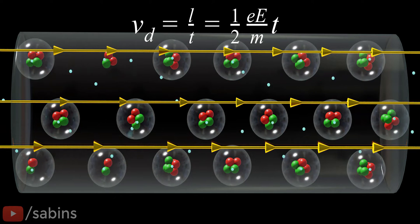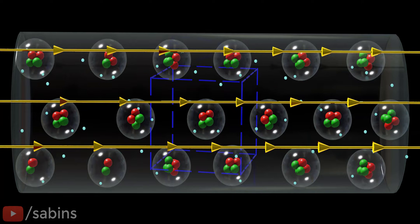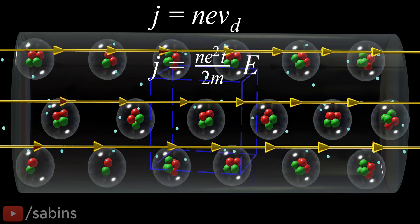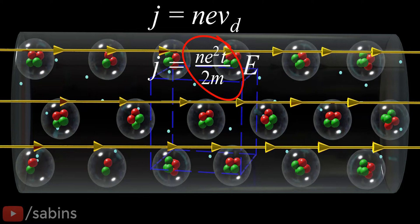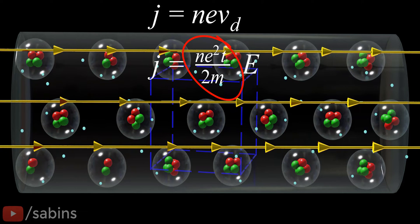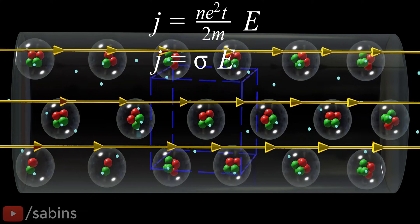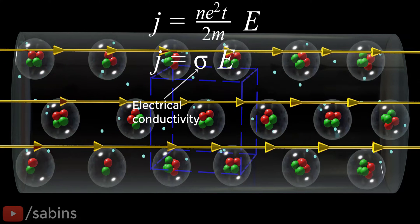If we assume there are N free electrons per cubic volume of the conductor, current flow per area can be deduced as follows. Note that all the variables in this red circle are properties of a material which varies only with temperature. Let's group these properties together and form a new property. This property is known as electrical conductivity.